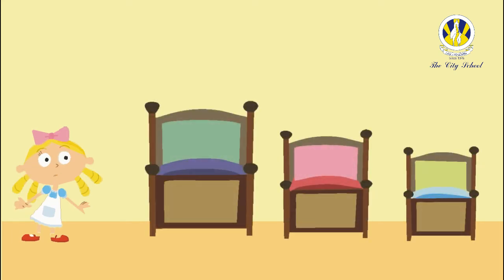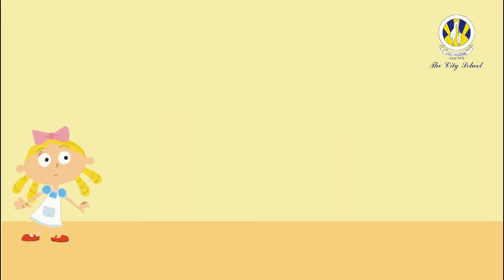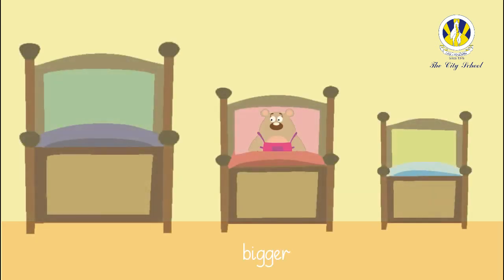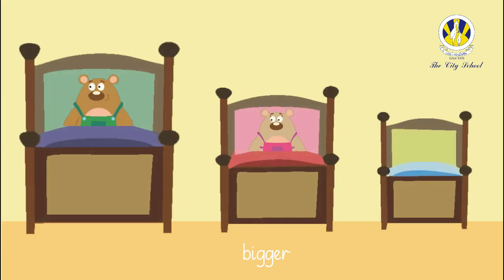Next, when Goldilocks went upstairs, what did she see? Excellent — Goldilocks saw three beds. Who's bed is bigger than Mama Bear's bed? Good thinking — Papa Bear's bed is bigger than Mama Bear's bed, and it is the biggest bed. Who has a big bed? Bravo — yes, Baby Bear has a big bed!